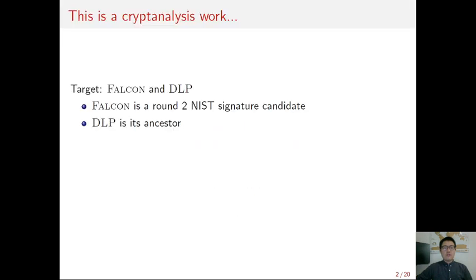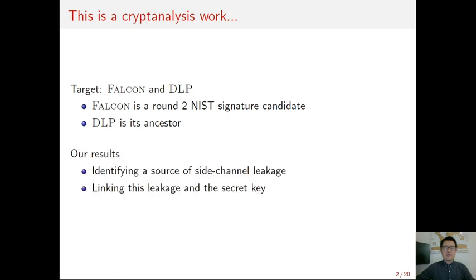This is a cryptanalysis work. Our targets are two lattice signature schemes, FALCON and DLP. FALCON is a Round 2 candidate in the NIST PQC competition, and DLP is the ancestor of FALCON. In this work, we first identify a source of side-channel leakage in some implementations of FALCON and DLP. Then, we link this side-channel leakage and the secret key.